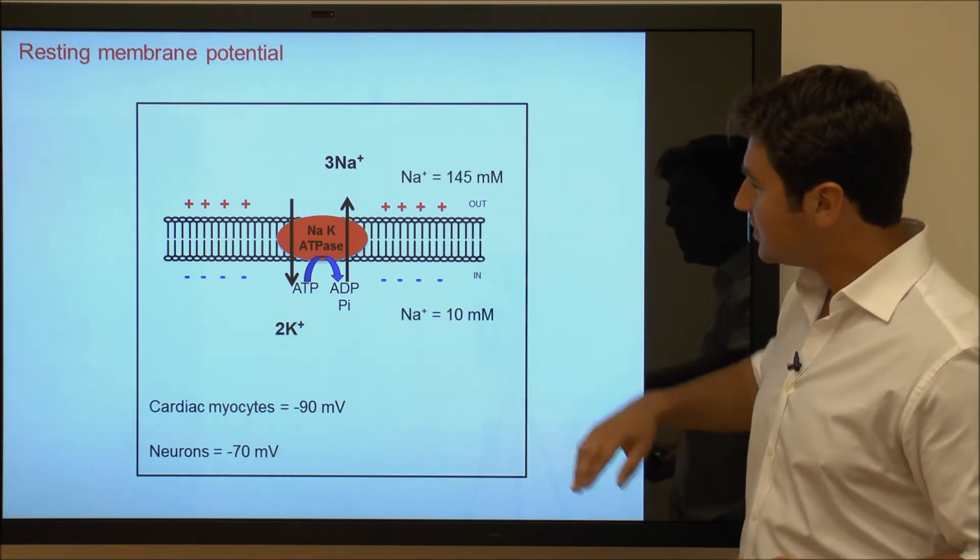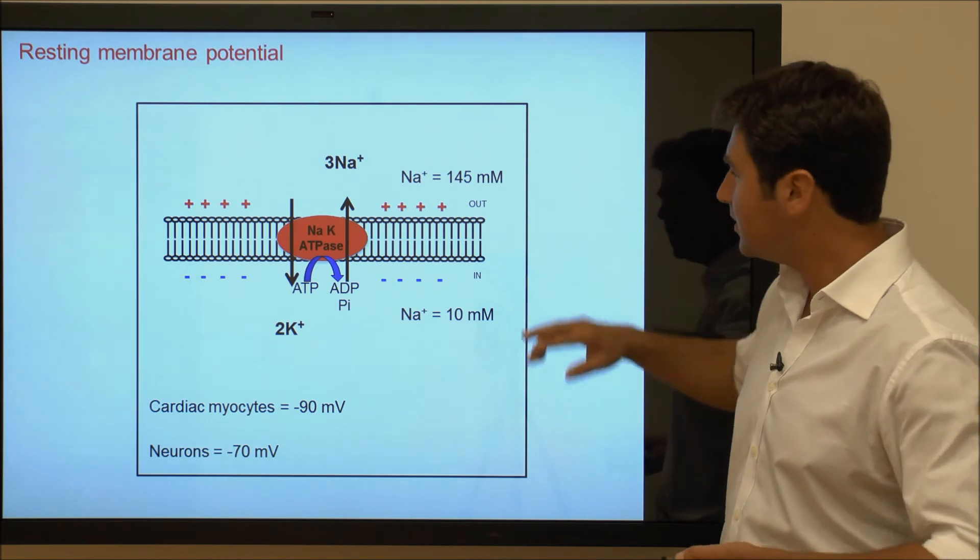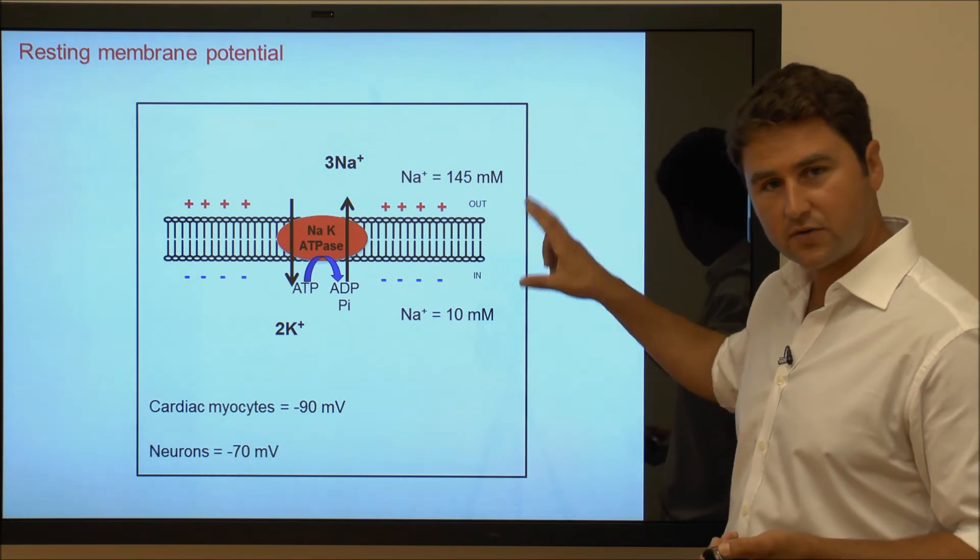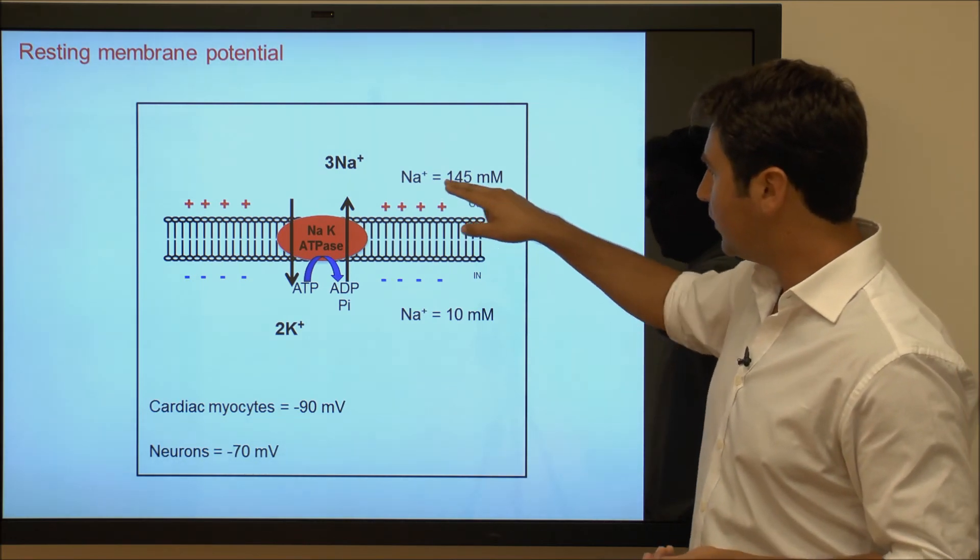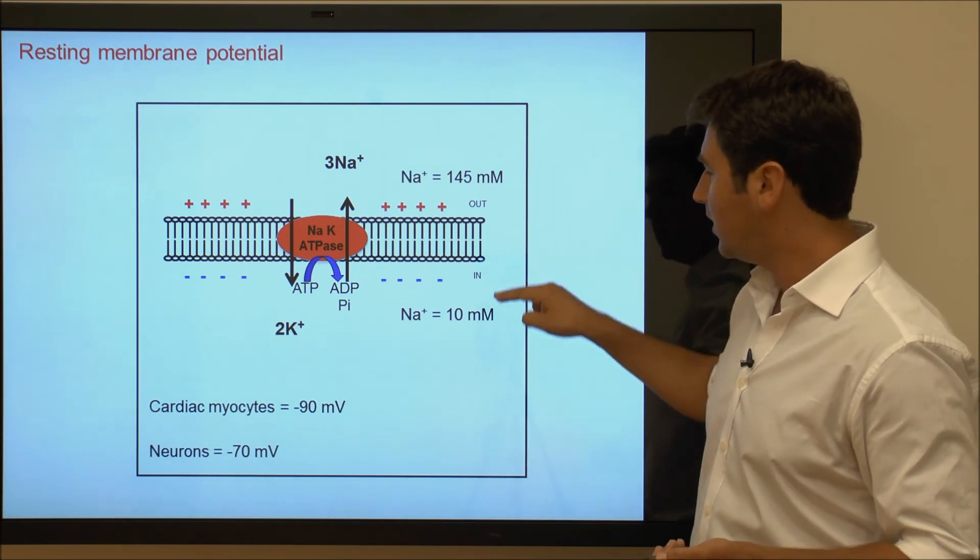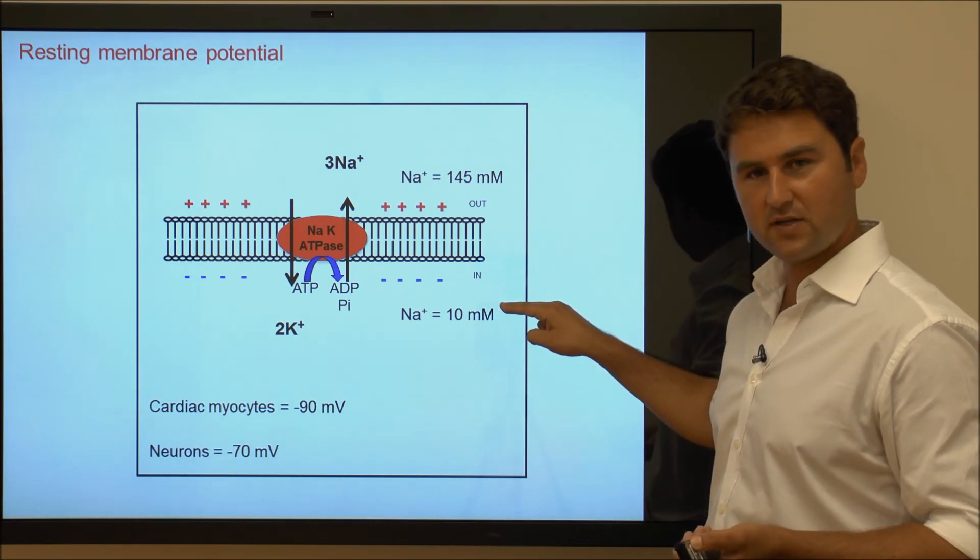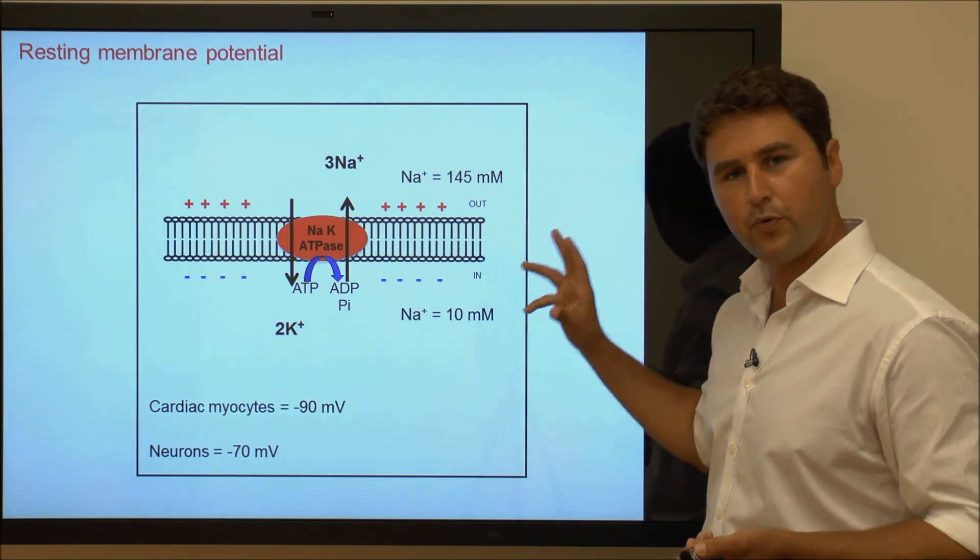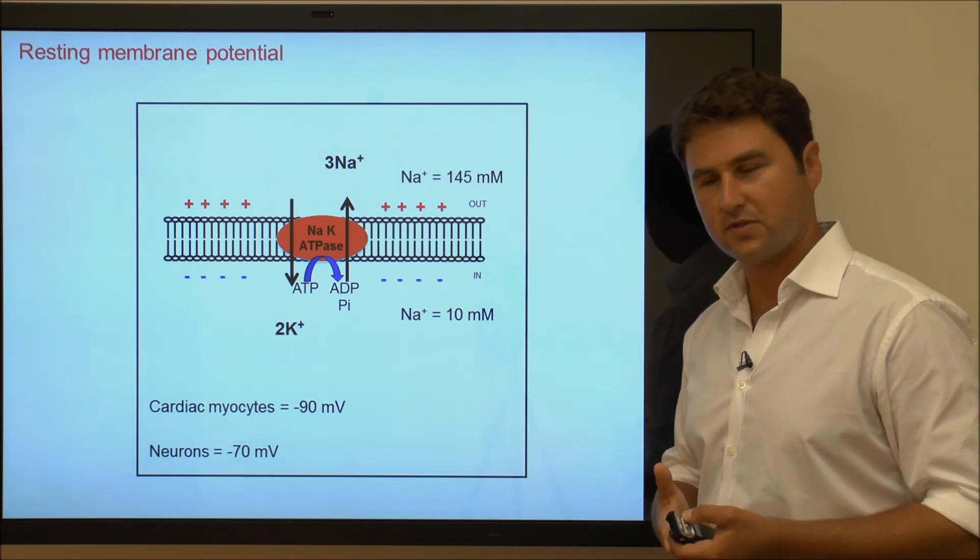Because sodiums are continuously being extruded, there is a sodium gradient across the membrane with sodium on the outside being around 145 millimolar compared to 10 millimolar on the inside. This gradient is very important for the cell because it drives many other transport processes.